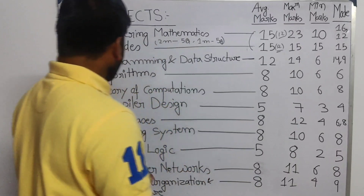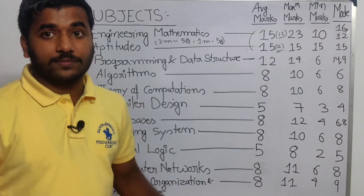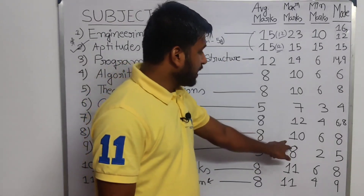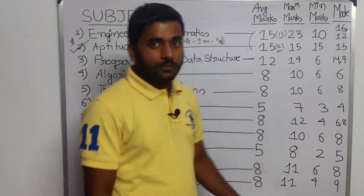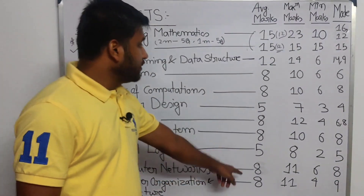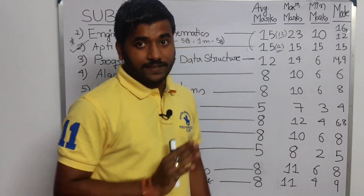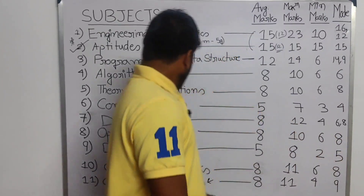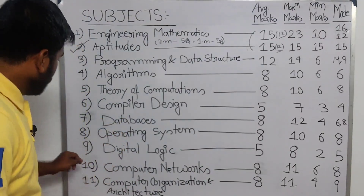Operating System is also an easy subject. The average marks is 8, maximum is 10, minimum is 6, and mode is 8 marks. Next is Digital Logic. In this order only you should study. Digital Logic has an average of 5 marks, maximum is 8, minimum is 2, and mode is 5 marks.